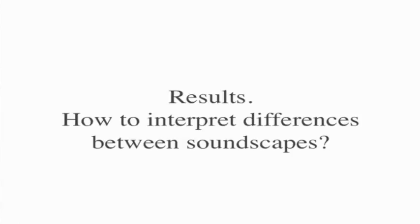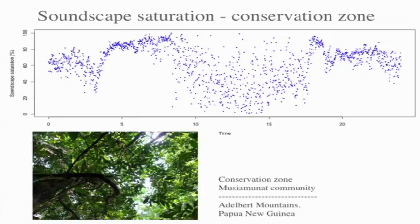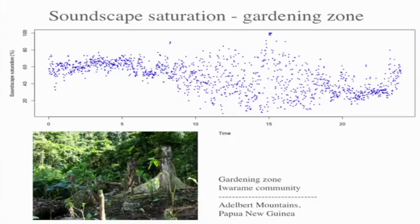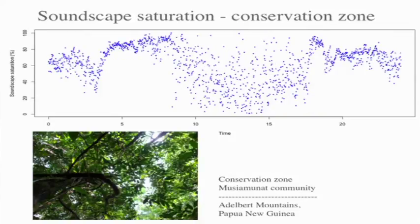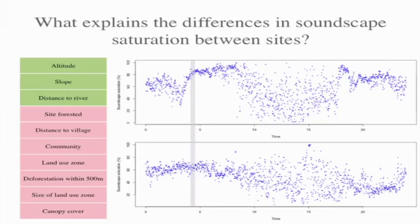The next question is how to analyze the data in some sensible way. This is an example of soundscape saturation for one site — a conservation site — over 24 hours. On the x-axis is one day from midnight to midnight, and on the y-axis is the percentage saturation. One hundred percent would mean lots of animals — birds, insects, amphibians — covering the whole frequency spectrum, and zero would mean nothing going on. You can see it's quite different from another site — this is from a gardening zone — which doesn't have these two peaks in the morning and in the evening.